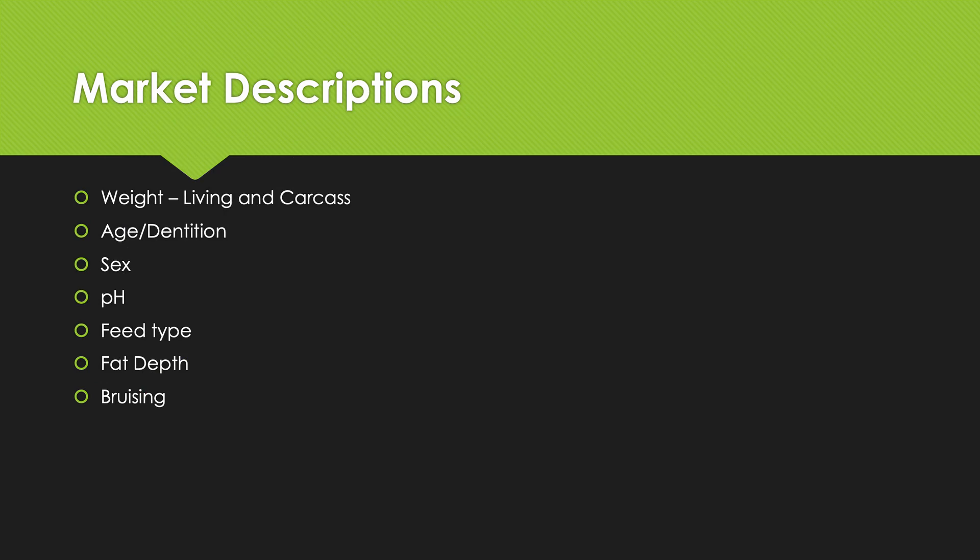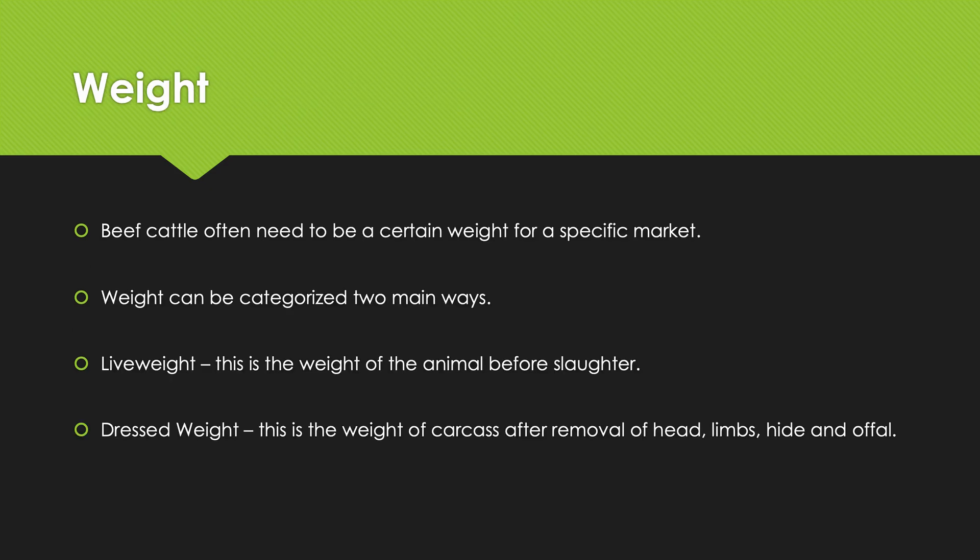We're going to look at weight, living and carcass, age/dentition, sex, and pH, and feed type. Weight: beef cattle often need to be a certain weight for a specific market. Weight can be categorized two main ways. The live weight is the weight of the animal before slaughter, and the dressed weight—this is the weight of the carcass after removal of the head, limbs, hide, and offal. So the dressed weight is pretty much the product that we can use. The live weight is important; it tells us how heavy the animal is. But the dressed weight is the total kind of weight and kilograms of beef that we can sell. So live weight, that's kind of self-explanatory. Dressed weight is when the meat is being dressed or prepared for exporting the meat or moving the beef into the next part of the production.